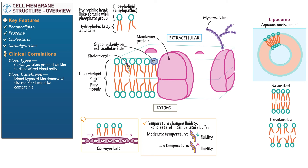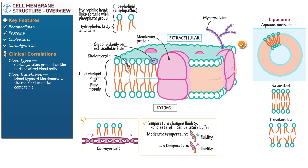Now let's fill in the rest of our diagram. Shade the rest of the cell membrane to indicate that it's densely packed and three-dimensional. Denote that the cell membrane is selectively permeable — some substances can pass through passively, while others use proteins for transport. We elaborate on these mechanisms elsewhere.